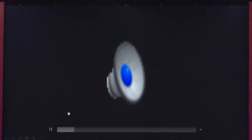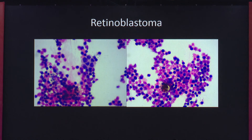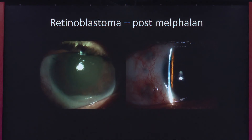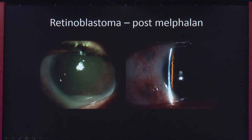This is a young child who presented with hypopyon and was suspected to have post-traumatic endophthalmitis. The child had vitrectomy, lensectomy, and multiple surgeries. The intraocular specimen was sent for cytology but nothing was picked up. Subsequently the child came to us, and we can see there is a thick hypopyon with nodules on the surface of the iris.